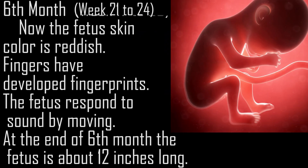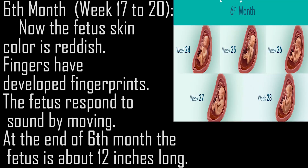Sixth month, week 21-24. The fetus skin color is reddish. Fingers have developed fingerprints. The fetus responds to sound by moving. At the end of the sixth month, the fetus is about 12 inches long.